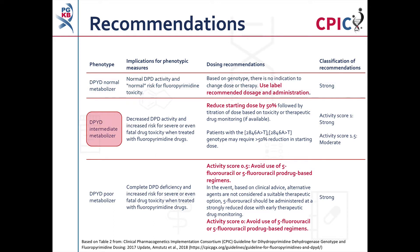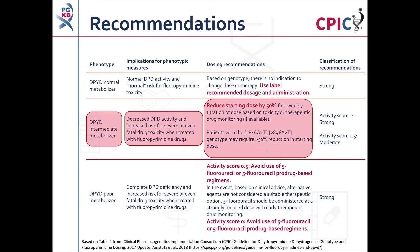Patients who are DPYD intermediate metabolizers have decreased DPYD activity and an increased risk for severe or fatal toxicity when treated with fluoropyrimidines. The starting dose should be reduced by 50% in these patients. Note that patients who are homozygous for the 2846 T allele may require a dose reduction of greater than 50%. The classification of this recommendation is strong for those with an activity score of 1 and moderate for those with an activity score of 1.5.